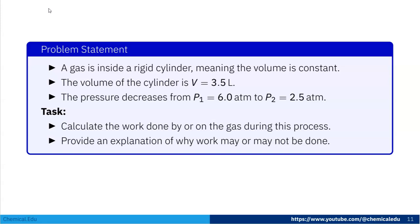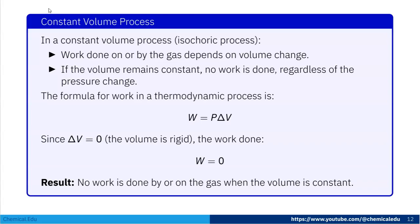Here is another problem. A gas is inside a rigid cylinder, so volume is constant at V equals 3.5 liters. The pressure decreases from P1 equals 6.0 atm to P2 equals 2.5 atm. The task is to calculate the work done by or on the gas. In a constant volume isochoric process, work depends on volume change. Since volume remains constant, no work is done regardless of pressure changes. The formula is W equals P times delta V; since delta V equals zero, W equals zero.